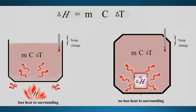Another improvement is that because of the steel shell and insulated jacket, there is no heat loss. If there is no heat loss, all the heat is fully transferred to the surrounding water inside, fully reflecting in the temperature rise. So the measurement is much more accurate. That is the improvement of the bomb calorimeter.